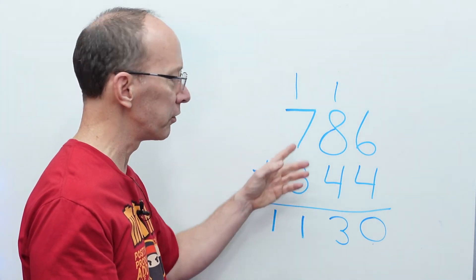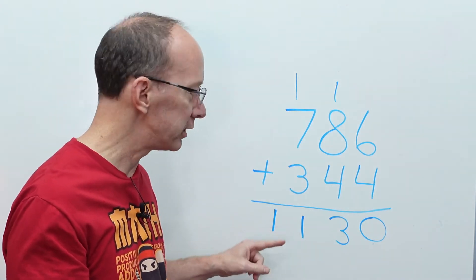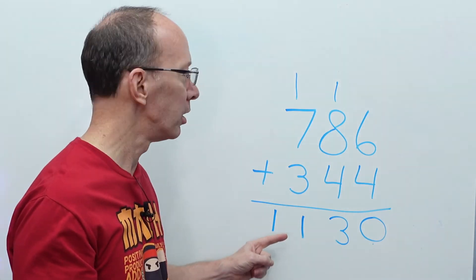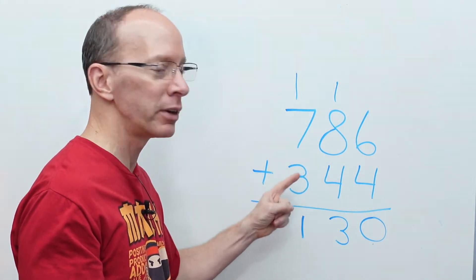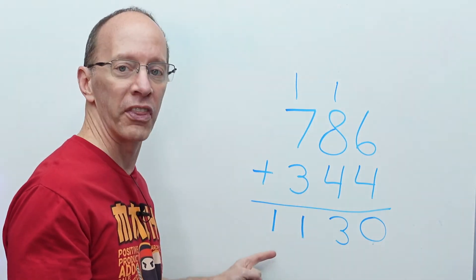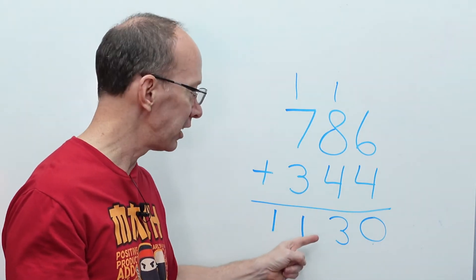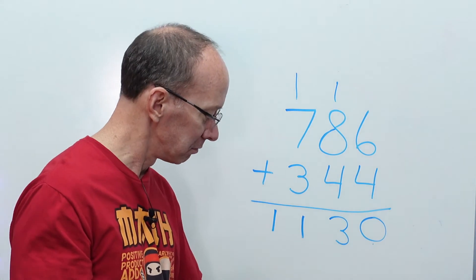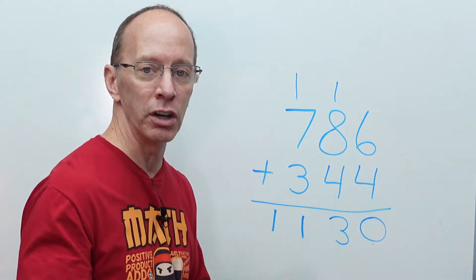You put the 1 here and just put it right here. All right. Don't worry about carrying it over. If there's nothing right here, drop it right there. So now we have a big number. 786 plus 344 equals 1,130. All right. Ready to do another one? Let's do it.